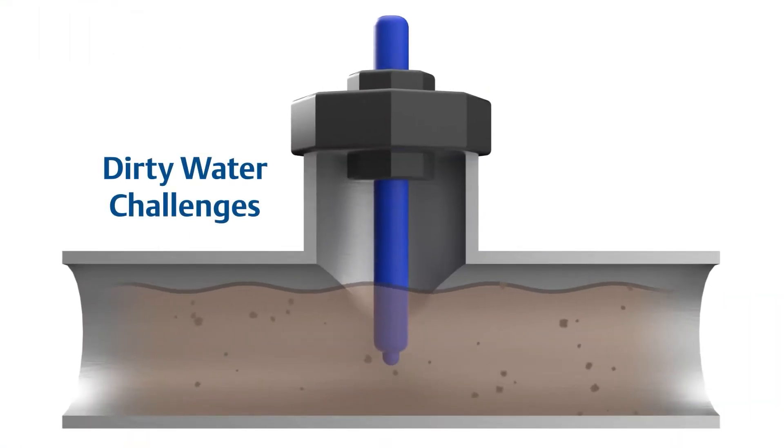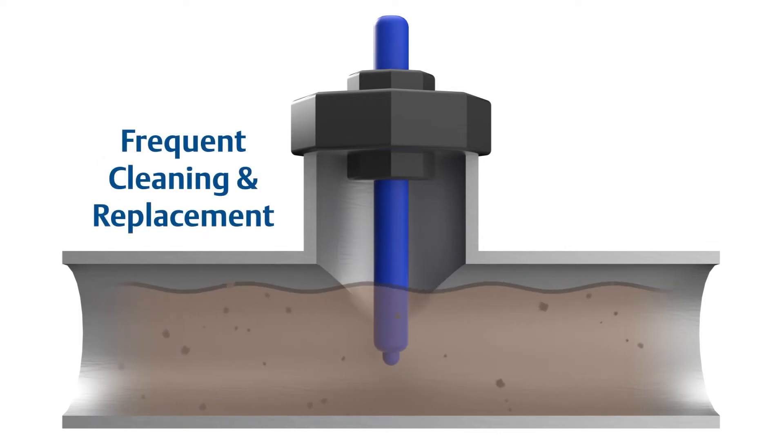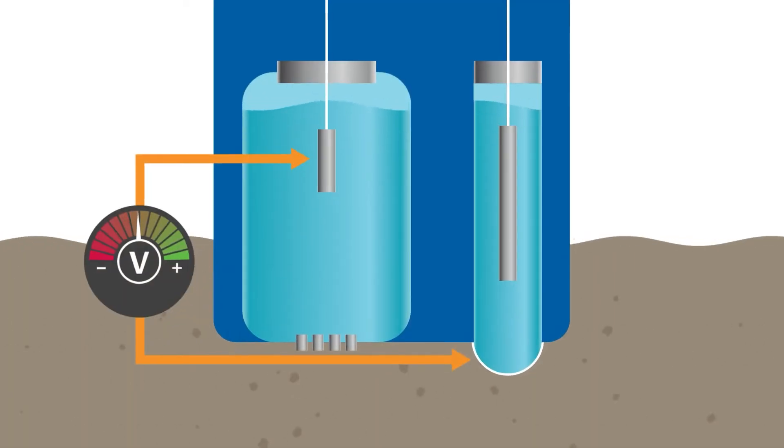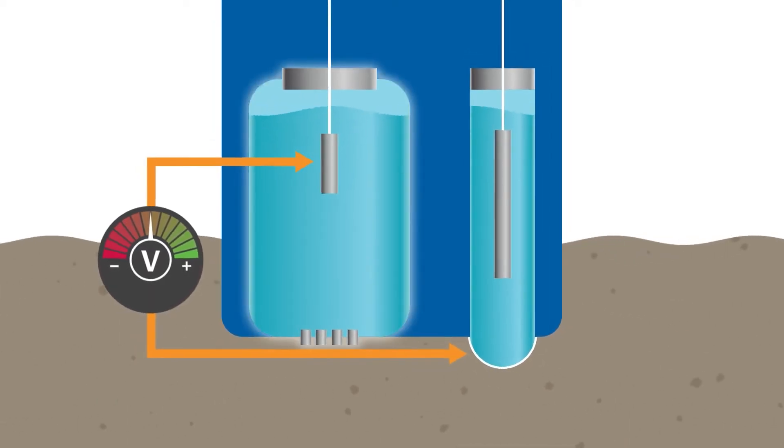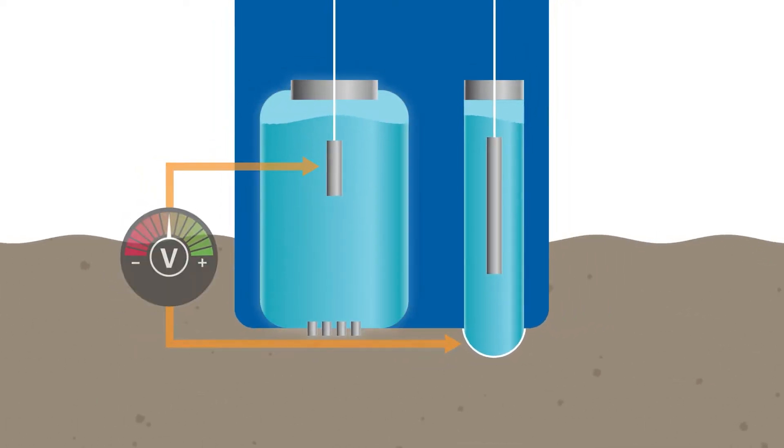In applications with dirty water, pH measurement can be challenging, requiring frequent replacement and cleaning of sensors. Here's why: pH sensors work by measuring the voltage difference between a pH-sensitive measuring electrode and a stable reference electrode.